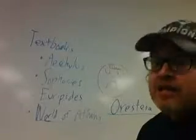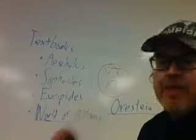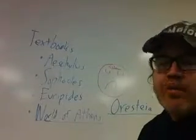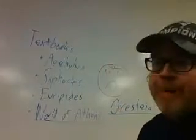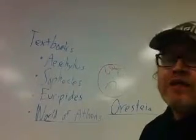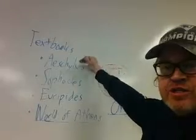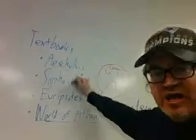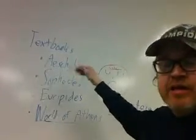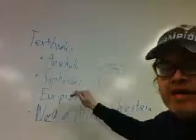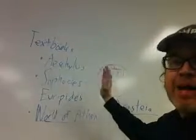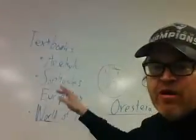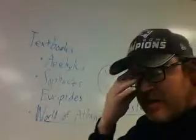For Euripides, we're using the Ten Plays of Euripides translated by Moses Hadas. We're reading four plays: Electra — careful, it's the same name but a different play by a different playwright — then Trojan Women, then Bacchae (sometimes called Bacchants), and finally Medea. So to summarize: for Aeschylus — Persians, Seven Against Thebes, and the three Oresteia plays; for Sophocles — Electra and the three Oedipus plays including Antigone; for Euripides — Electra, Trojan Women, Bacchae, and Medea.